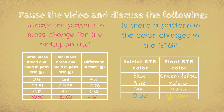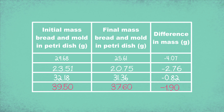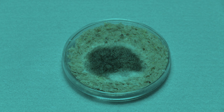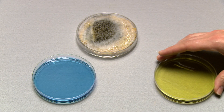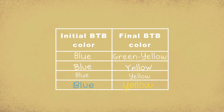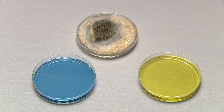What's the pattern in mass change for all the samples of moldy bread? And is there a pattern in the color changes in the BtB? Pause the video and discuss. Did a loss in mass match your prediction? It's funny that the mold grew, but the total mass of the bread and mold went down. So where did that mass go? And the change in BtB color from blue to yellow means that there was a gain in the concentration of carbon dioxide. Where did the carbon dioxide come from? Is there any evidence of an energy change?